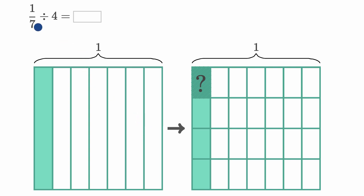We're asked to figure out what is 1/7 divided by four, and they help us out with this diagram. We have a whole divided into seven equal sections, each of those is a seventh, and we have one of those sevenths filled in.